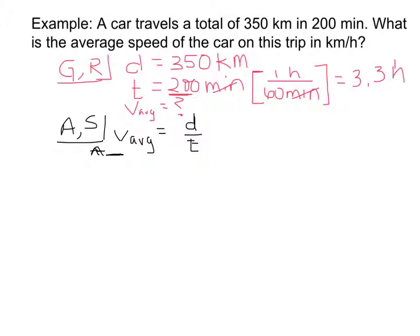So above the line is analysis, and below is the solve part. Okay, so our solve is just simply plugging in the numbers. So the average speed is 350 kilometers divided by 3.3 hours, which gives us 106.06, and that continues on, it's a repeating one as well, kilometers per hour.